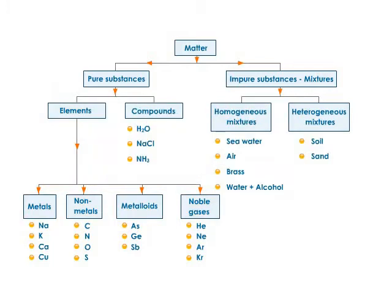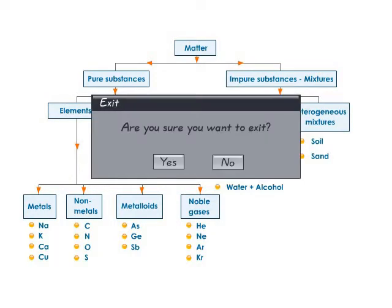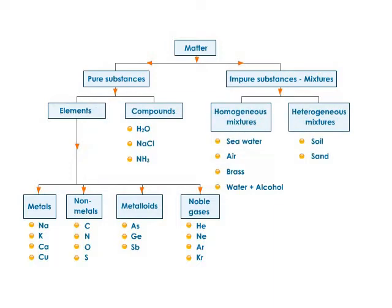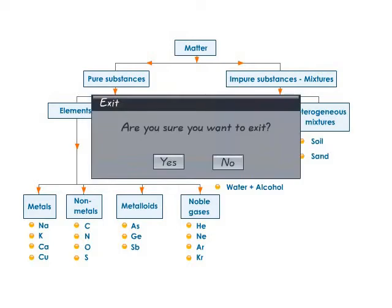The slide shows examples of each of these categories. When two or more elements react with each other in definite ratios, you get compounds. Water, cooking salt, and ammonia are some examples of compounds.